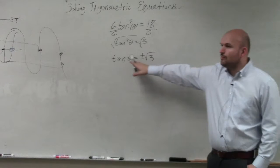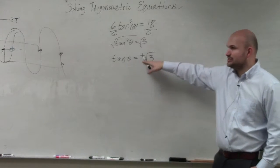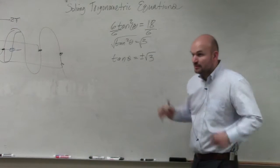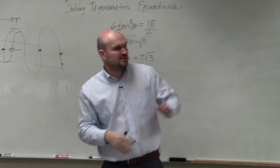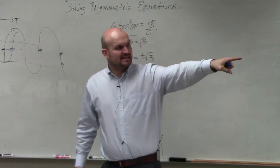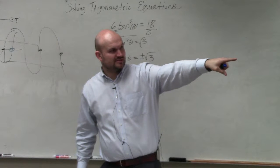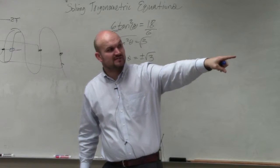So we've got to go and figure out, well, what angle then produces tangent of plus or minus square root of 3? Well, let's use a little bit of work that somebody already did. We know that the angle, what angle is that? What reference angle is that? That reference angle is pi over 6.